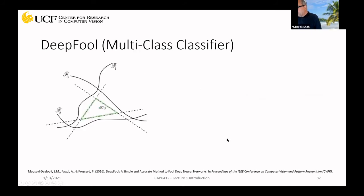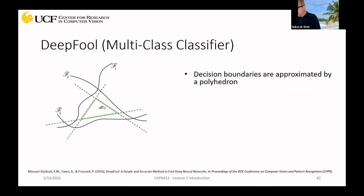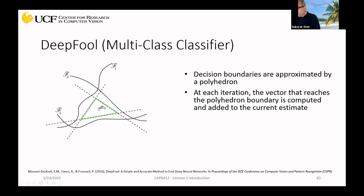For multi-class classifiers in DeepFool, there are multiple decision boundaries — one for each class pair. Starting from x0, you approximate these curved boundaries with linear polyhedra. At each iteration, you find the vector that reaches the nearest polyhedron boundary and move across it. The algorithm initializes with x0, and as long as the predicted class remains the same as the original, it computes the minimal perturbation ri and updates xi until the class changes. We will spend a whole lecture on this foundational paper next week.